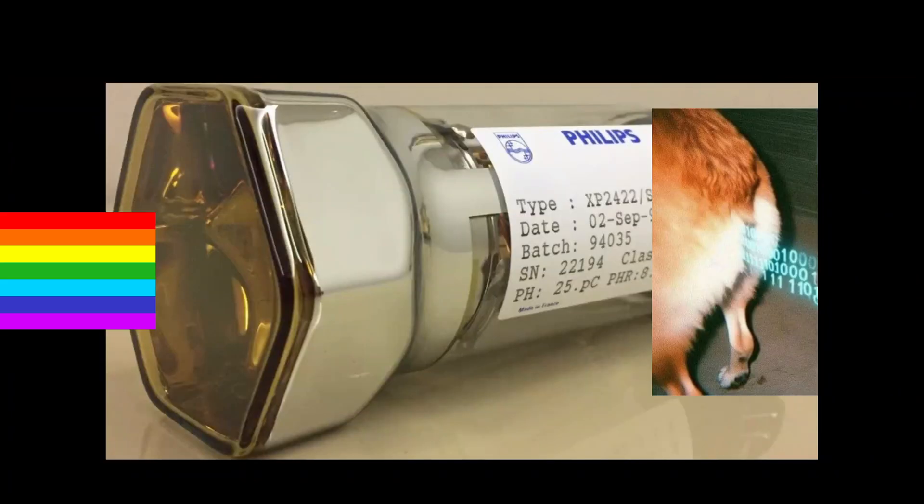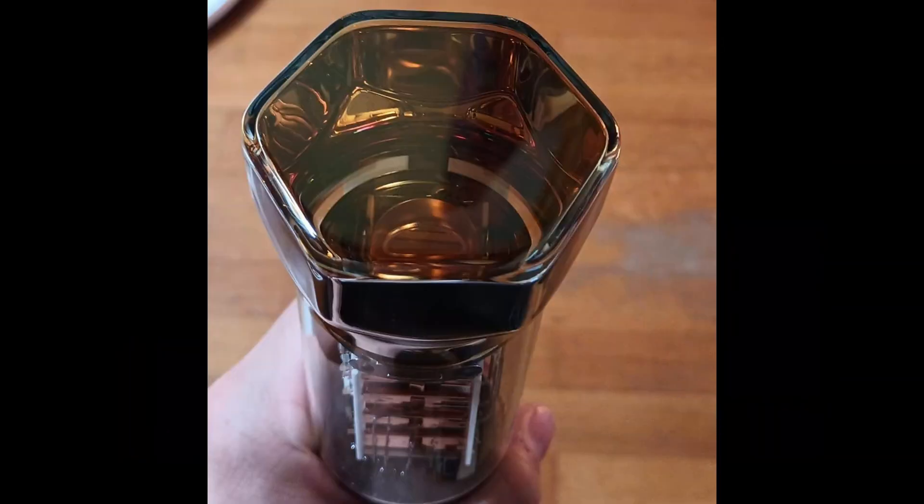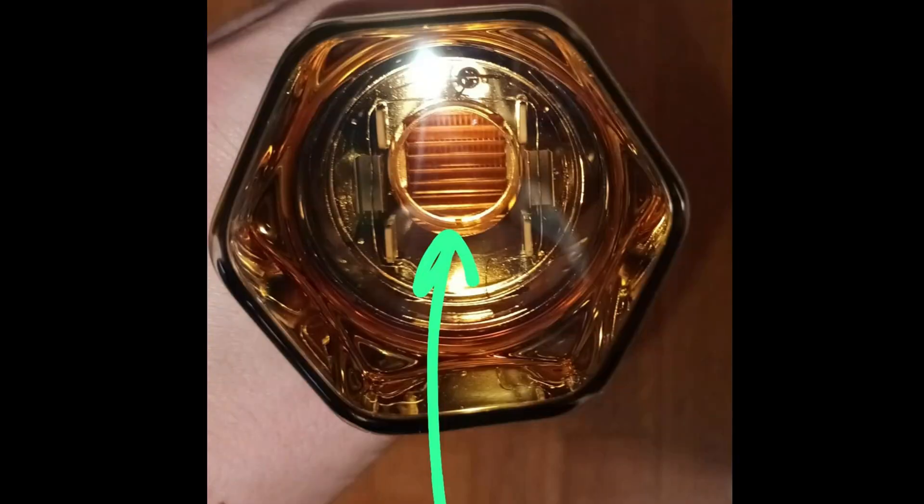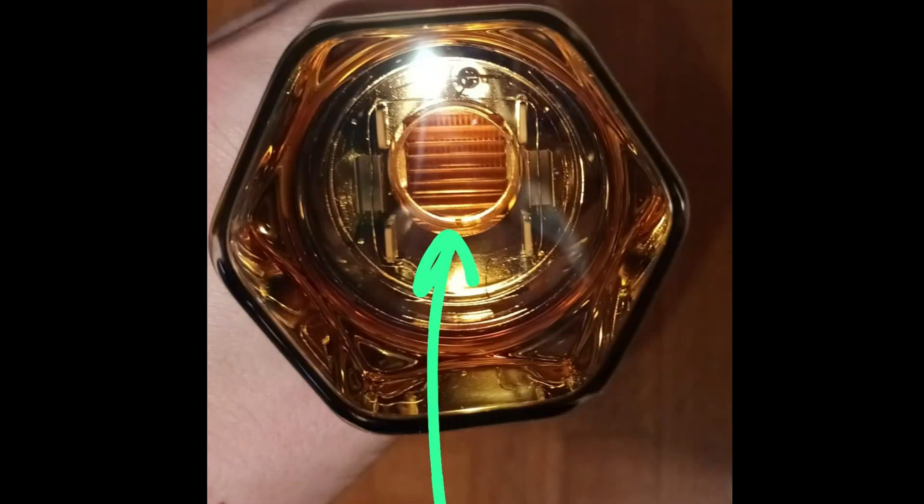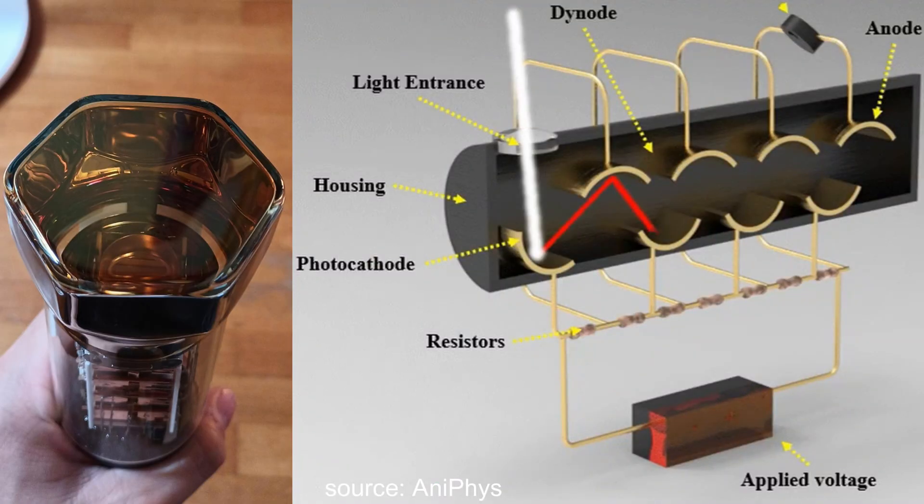A phototube is a device that transforms light into an electric signal and can be sensitive to very low amounts of light. It uses a photocathode that creates electrons via the photoelectric effect that are then amplified by a series of dynodes using secondary electron emission.